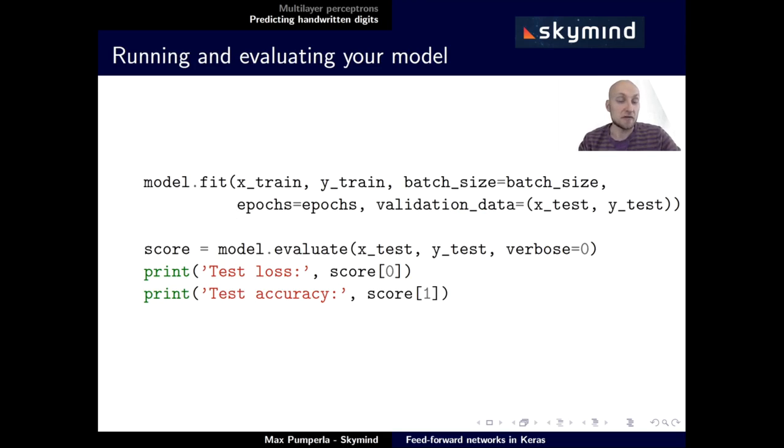We can then fit our model with the train data that we have. We set the batch size as defined previously in the epochs, and we can also specify validation data, namely the test data we've created.